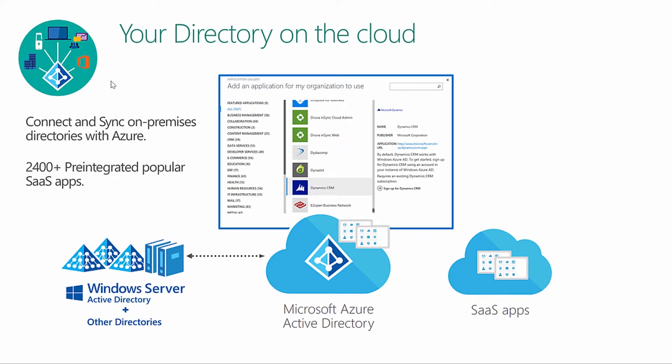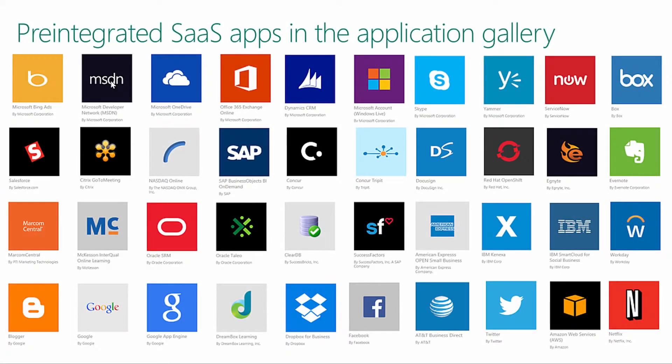When you have your directory in the cloud, you can integrate with up to 2,400 different pre-integrated SaaS applications through what we call Federation as a Service, which also supports user provisioning and deprovisioning, as well as custom applications. This allows integration outside of Microsoft's 2,400-plus app catalog. Major vendors are represented — services ranging from MSDN through Salesforce, Oracle, and AT&T, showing the breadth of SaaS applications Microsoft supports today.